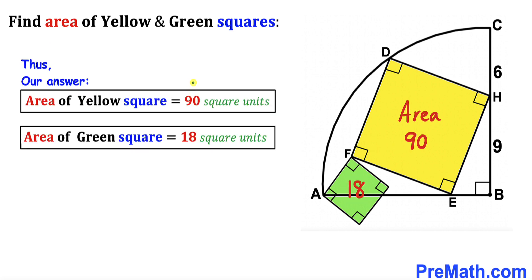Our comprehensive answer: the area of the yellow square is 90 square units and the area of the green square is 18 square units. Thanks for watching and please don't forget to subscribe to my channel for more exciting videos. Bye!